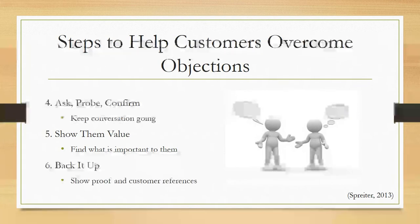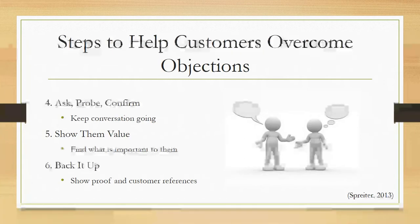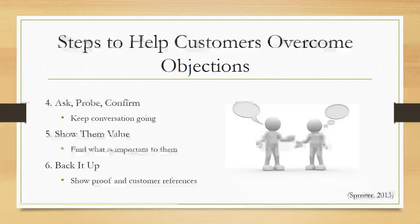The next step is ask, probe, and confirm. If you're not getting to the root of the objection, make sure you're clarifying what they say. Reiterate back what they've said and restate it in your own words so that you confirm you're really understanding why they're objecting.